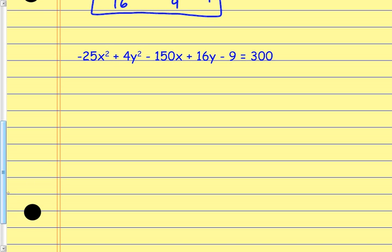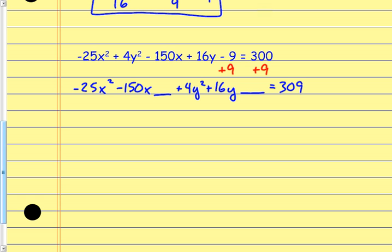Doing the same thing with the next example: I start by creating space, so I add 9 to each side. Then I organize: −25x² − 150x with a space, plus 4y² + 16y with a space, equals 309. From here I can't complete the square with the −25 or the positive 4, so I need to factor out each of those values. Factoring out −25 leaves x² + 6x — be careful with your signs. Factoring out 4 leaves y² + 4y.